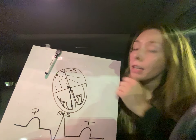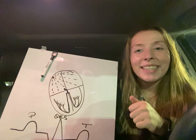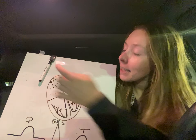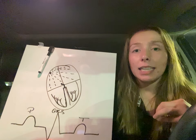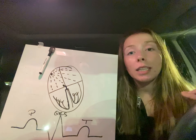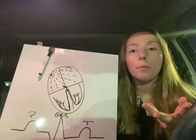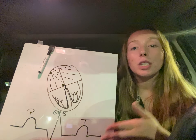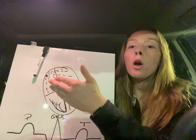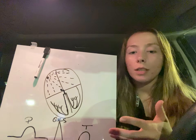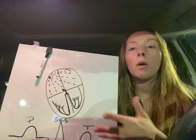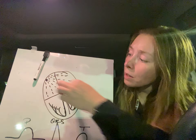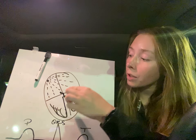We have our SA node, represented by this little dot here. It's going to send a signal, and then we have intercalated discs, which is the main difference between our cardiac muscle and our regular muscle. This allows the signal to be sent throughout the heart without having to go through each neuron like we do with our muscles. That signal is going to be sent through our intercalated discs.